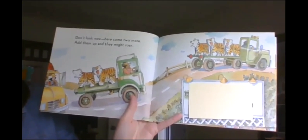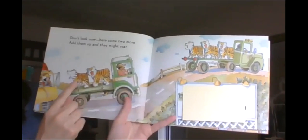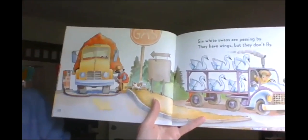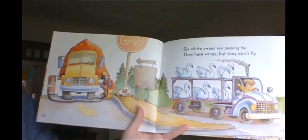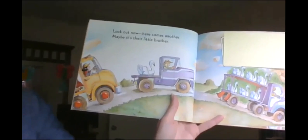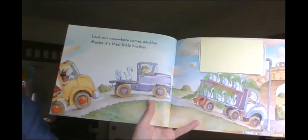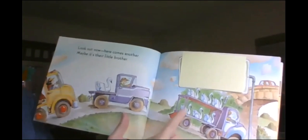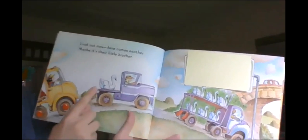So we have three and two more. Together is gonna give us one, two, three, four, five. Six white swans are passing by. They have wings, but they don't fly. Look out now. Here comes another. Maybe it's their little brother.